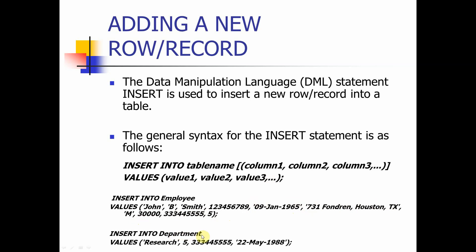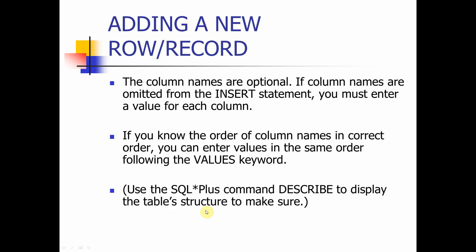Similarly, to insert into the department table we provide values such as 'Research' for department name, department number five as a number, a social security number, and the manager's start date. Both examples do not use the optional column name list because they simply follow the order of table creation for each attribute. If column names are omitted from the INSERT statement, you must enter a value for each column in the correct order following the VALUES keyword.